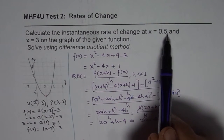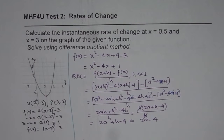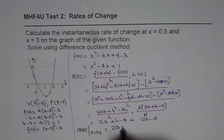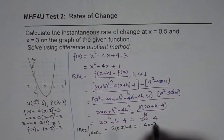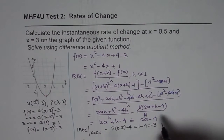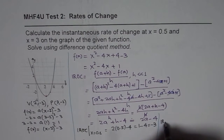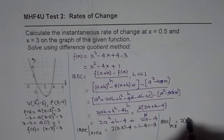We need to find the rate at x equals 0.5 and at x equals 3, which we do by substituting the value of a. Instantaneous rate of change at x equals 0.5: replace a with 0.5 to get 2 times 0.5 minus 4, which is 1 minus 4, equals -3. And for x equals 3: 2 times 3 minus 4 equals 6 minus 4, which is 2.